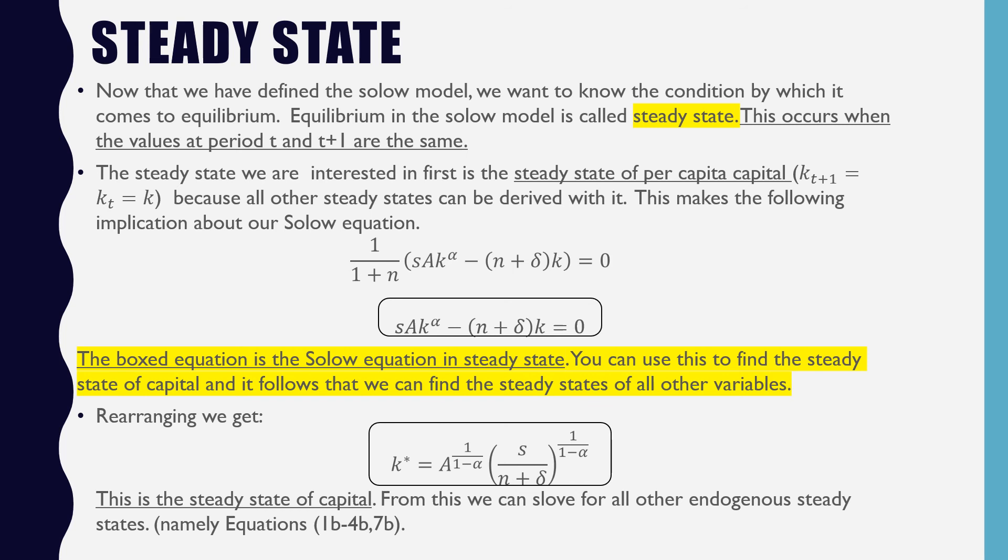Rearranging, we get K star. This is the steady state of capital. From this, we can solve for all other endogenous steady states, namely equations 1b to 4b and 7b.